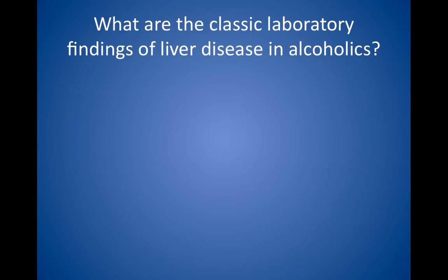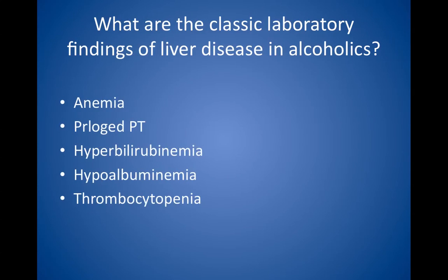What are the classic laboratory findings of liver disease in alcoholics? Anemia, which is classically macrocytic, prolonged prothrombin time, hyperbilirubinemia, hypoalbuminemia, and thrombocytopenia.